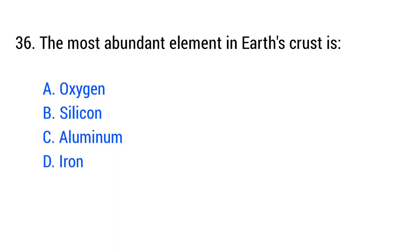Question number 36. The most abundant element in Earth's crust is? The right answer is option A: Oxygen.